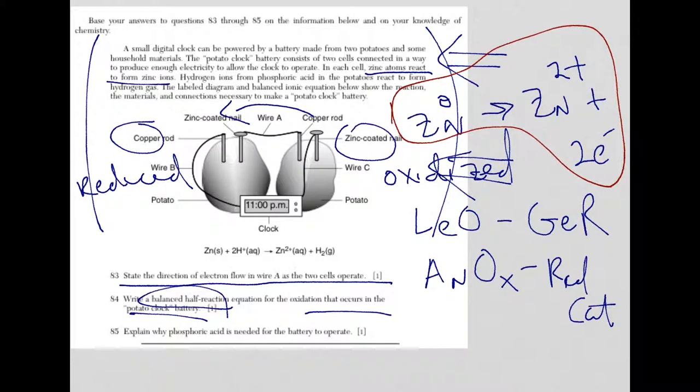And finally, in question 85, explain why phosphoric acid is needed for the battery to operate. Well, the phosphoric acid, let me just erase some of this so we can take a look at the reading passage here. It says that the hydrogen ions from the phosphoric acid in the potato react and form hydrogen gas.